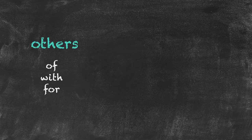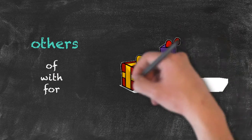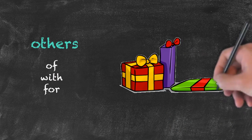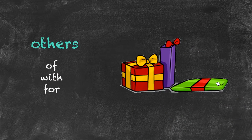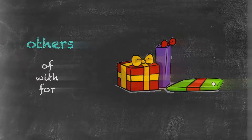Finally, we have our other prepositions: with, for, etc. For example, 'this is a gift for Gary' — I'm showing a relationship between Gary and the rest of the sentence. Of course, the prepositions listed here are just a small example of all the prepositions.